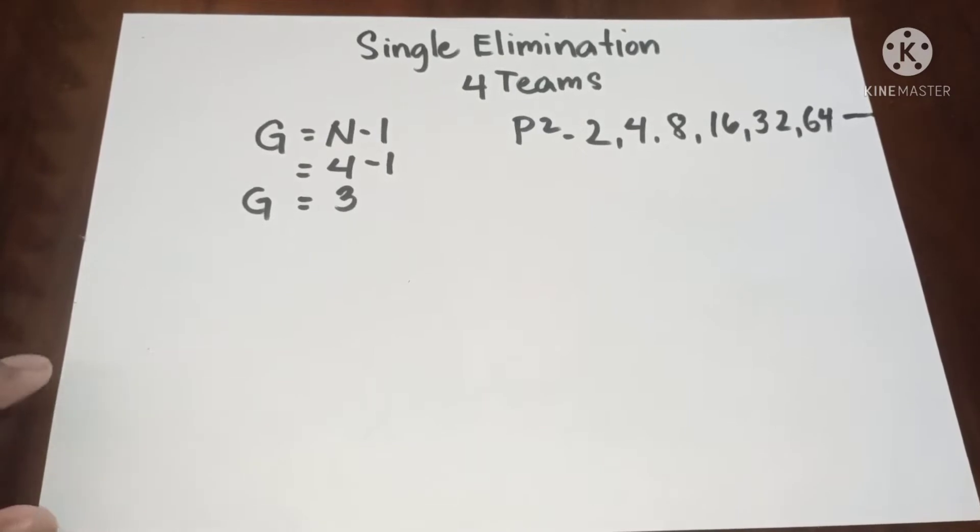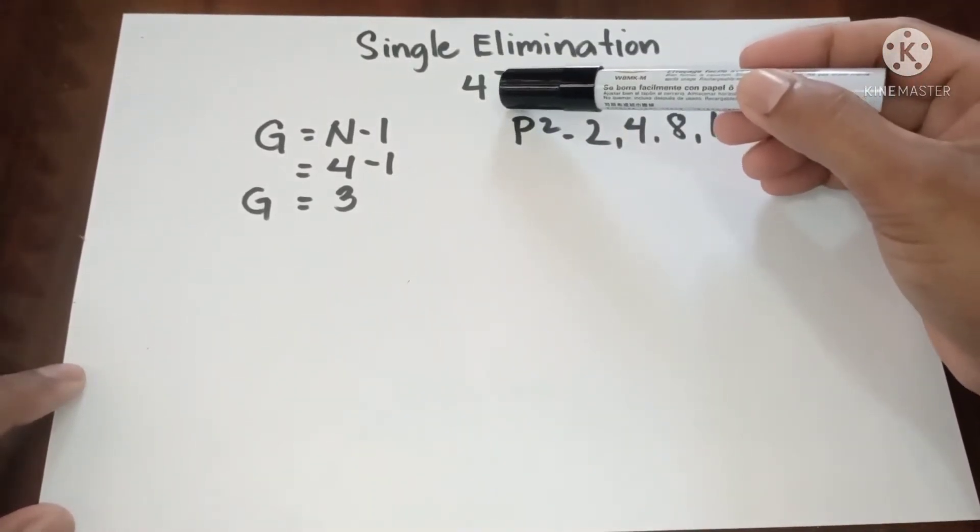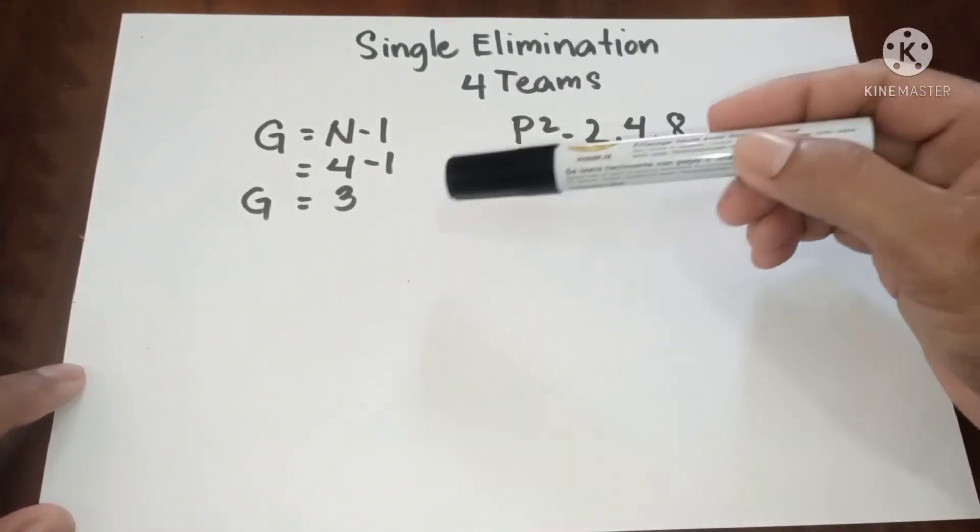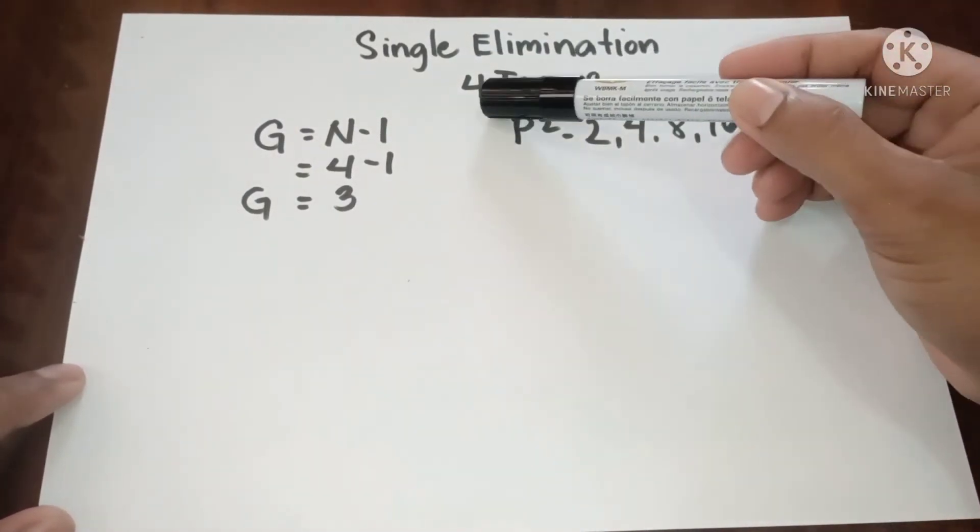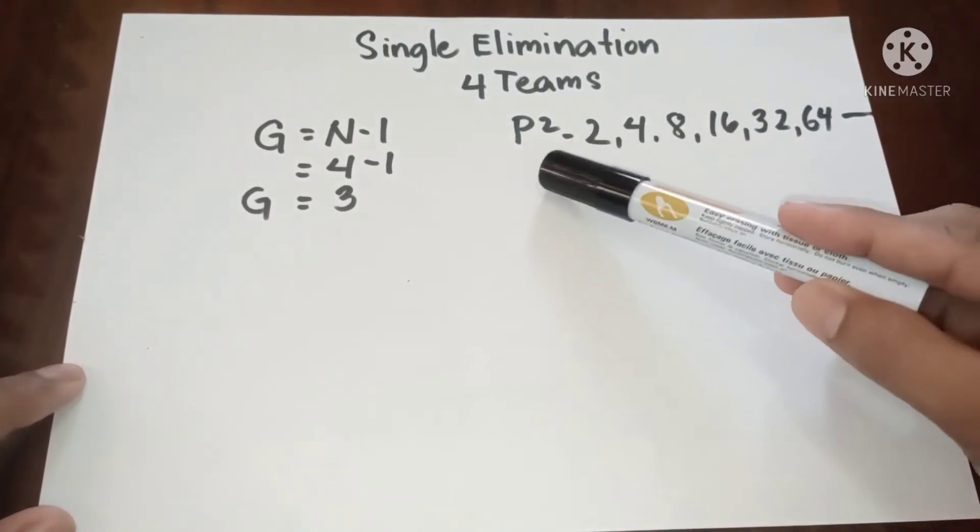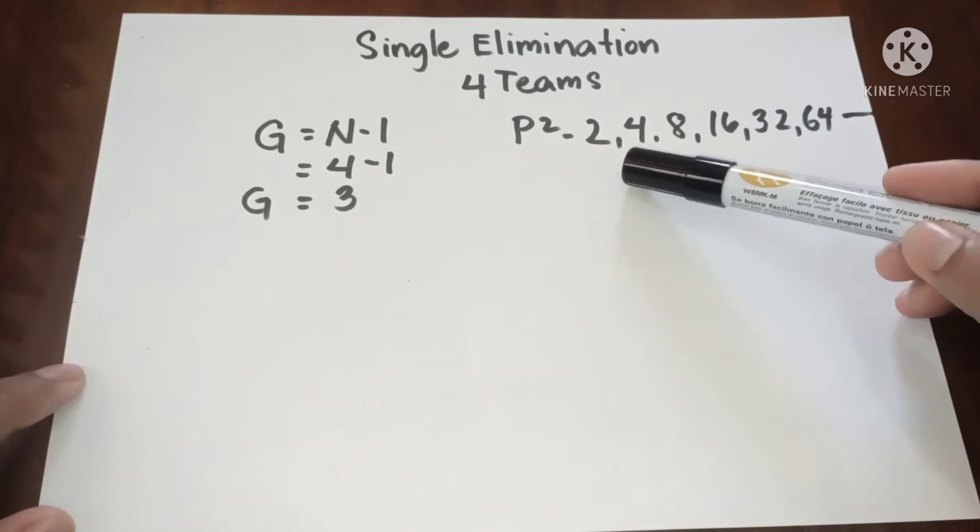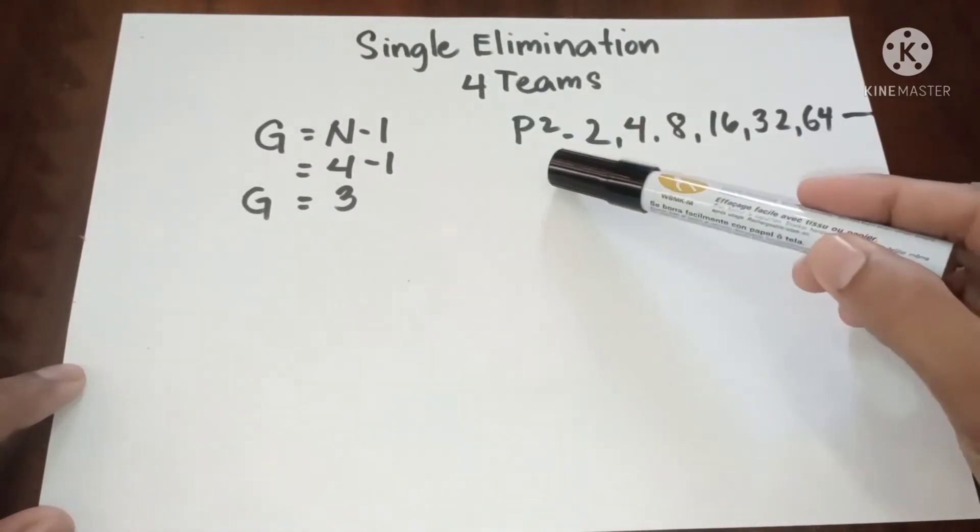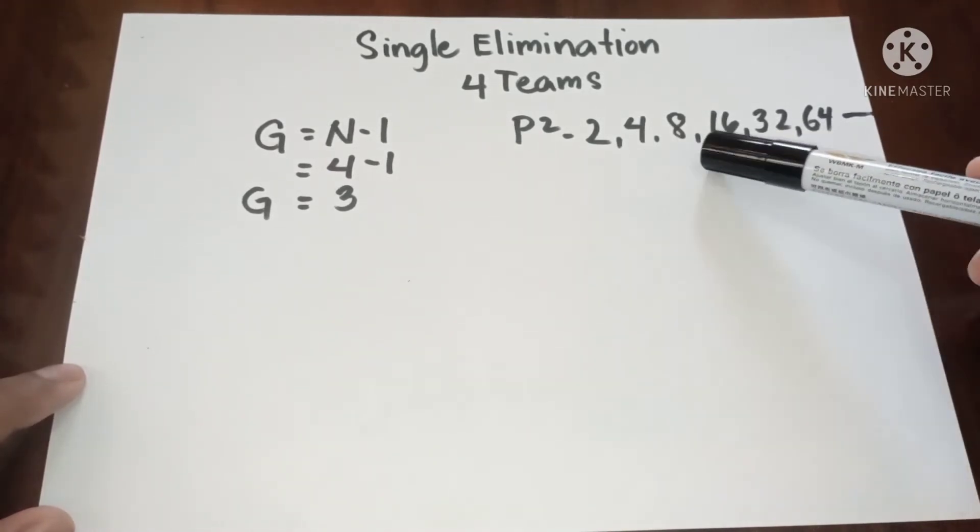Hello everyone, we are in single elimination for four teams and we have three games. Now since four is included in the power of twos, we don't need to determine the bias because four is already included in the power of twos. Same time we call eight ideal numbers.